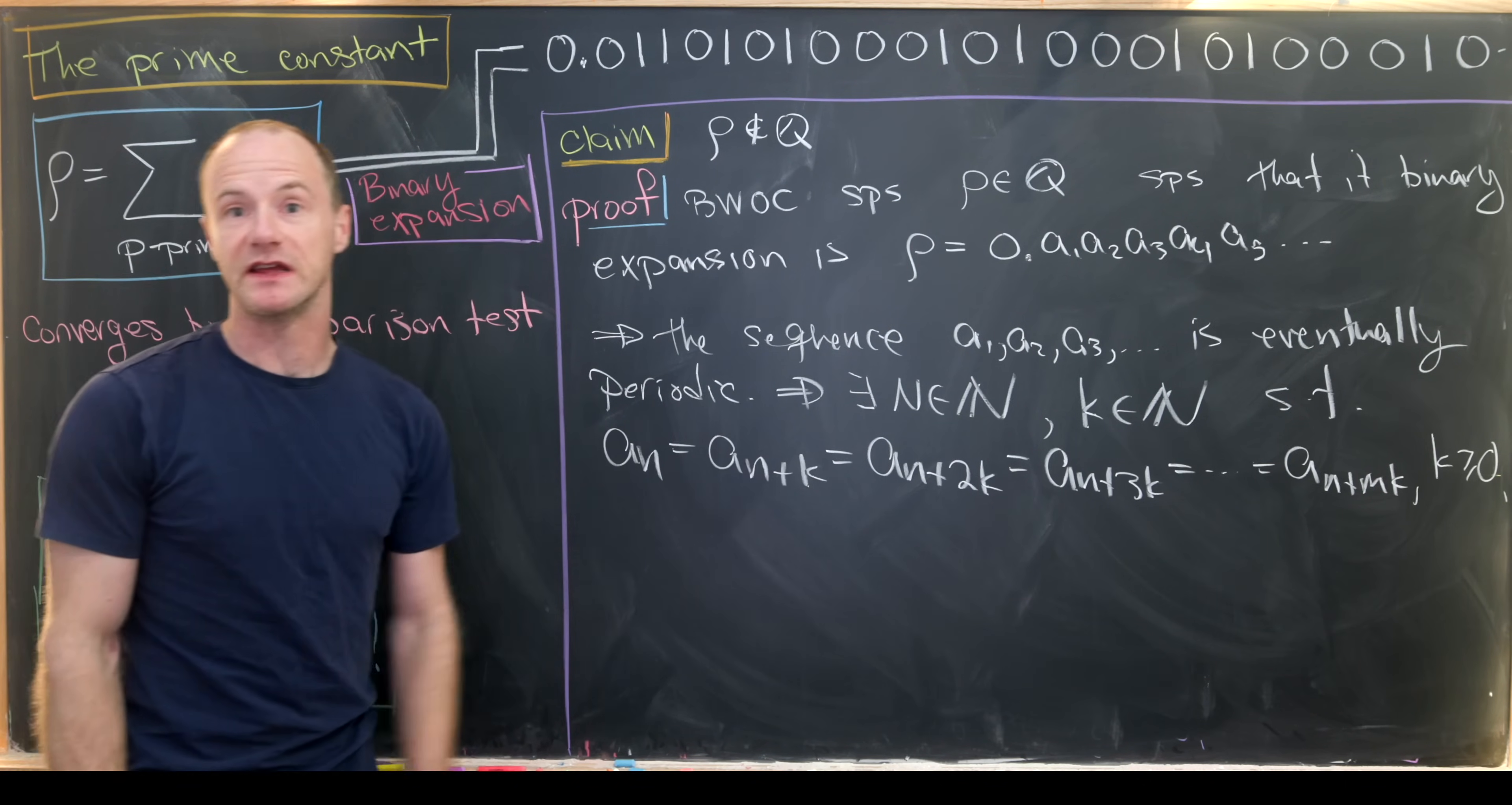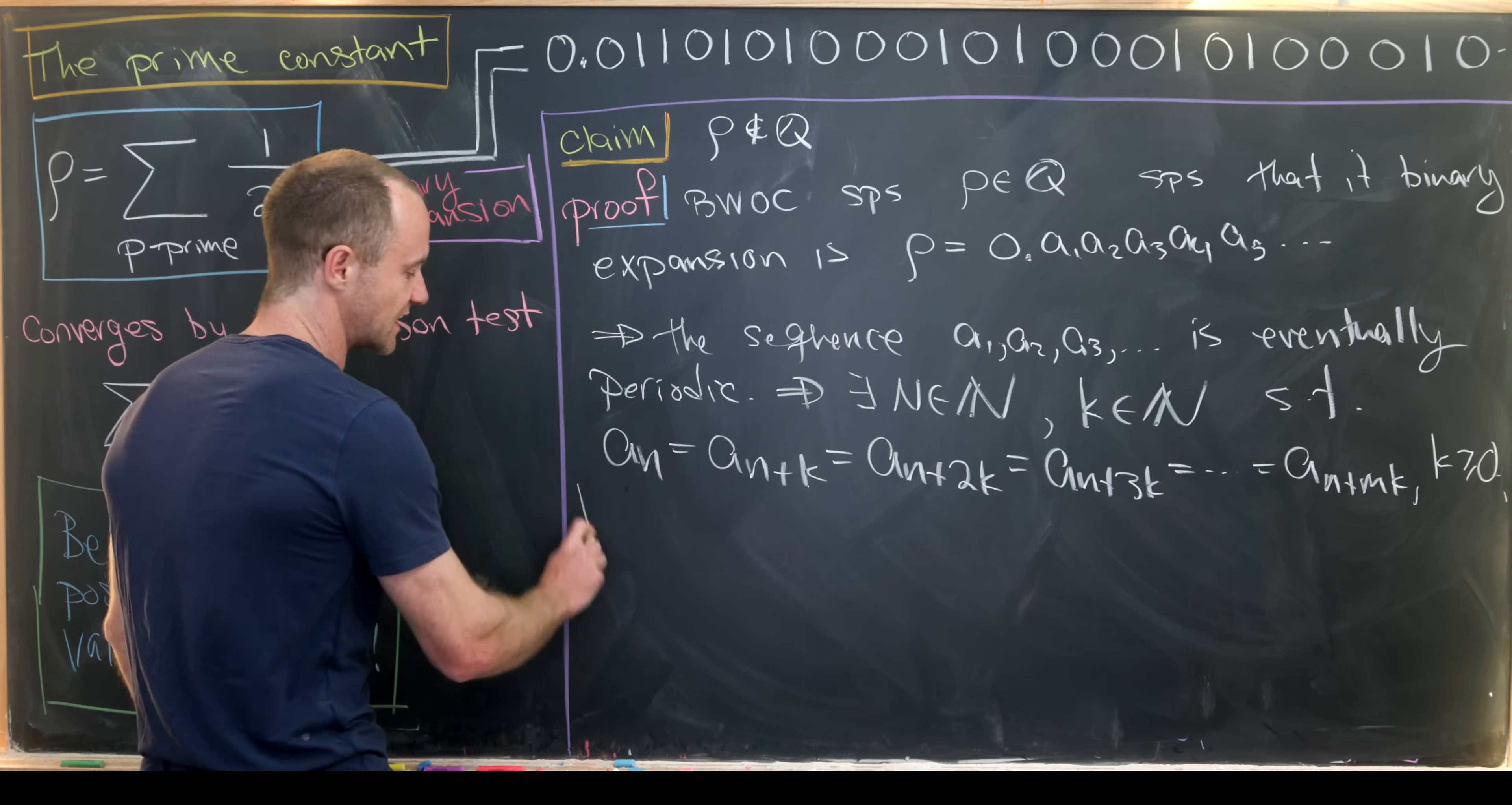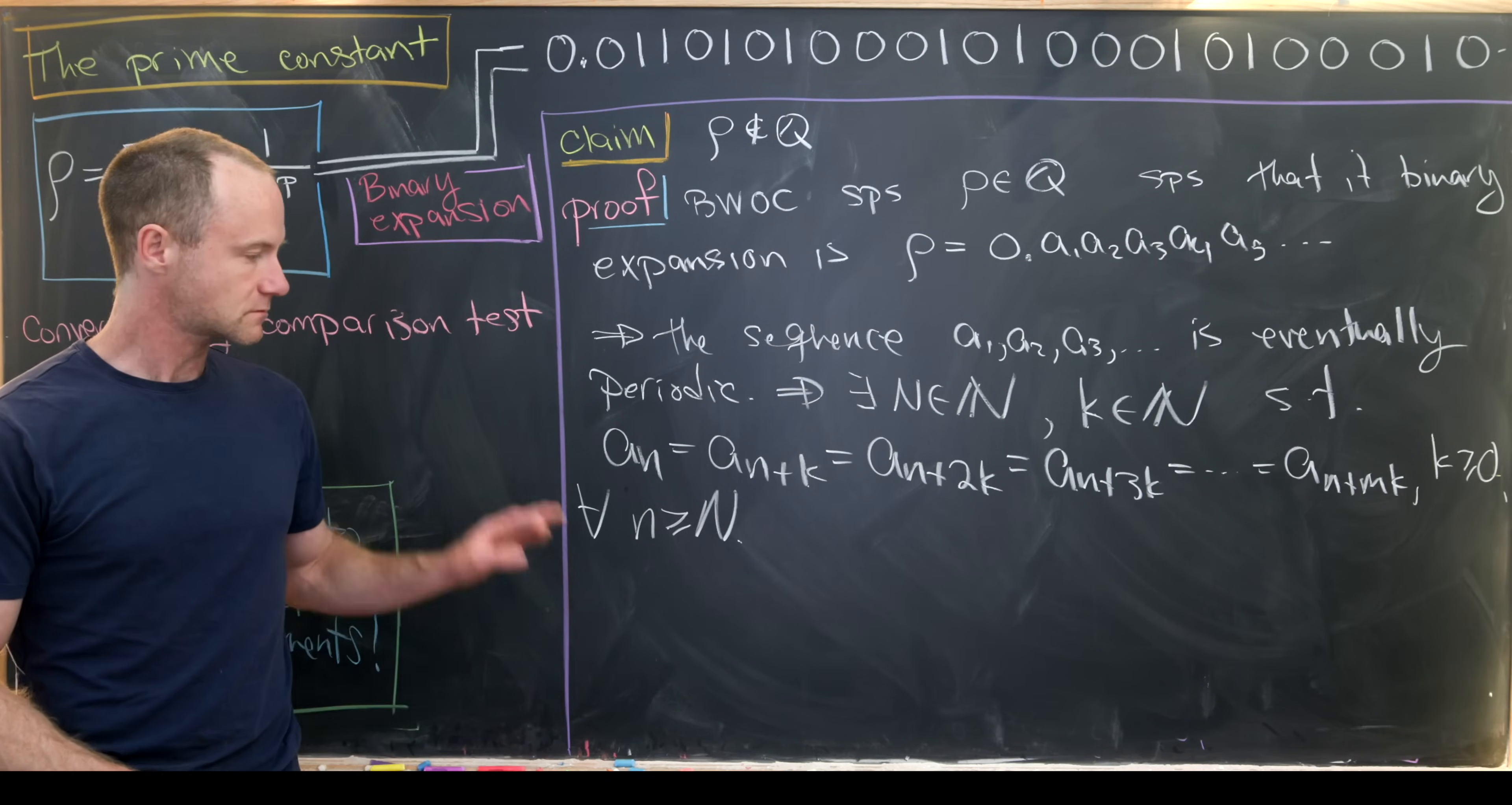So that's this periodicity, right? So we've got a period of k here. So we've got a sub n, a sub n plus k, like I said before. And this is going to occur for all n bigger than or equal to this capital N.